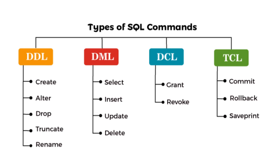Third is DCL — Data Control Language — used to set privileges such as GRANT or REVOKE database access permissions to specific users. Fourth is TCL — Transaction Control Language — under which statements like COMMIT, ROLLBACK, and SAVEPOINT come.